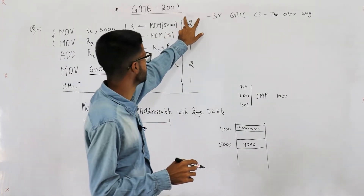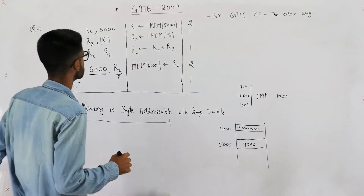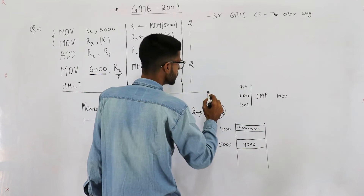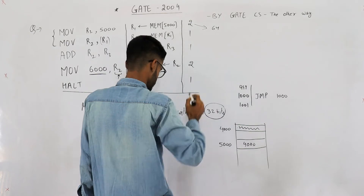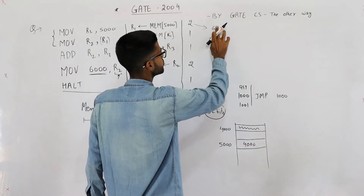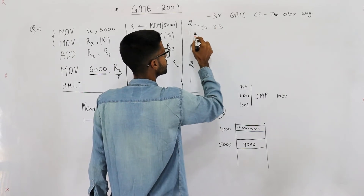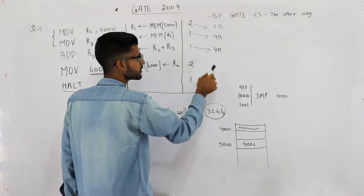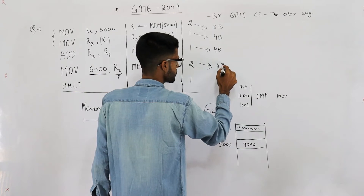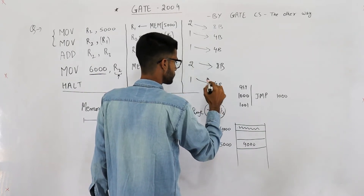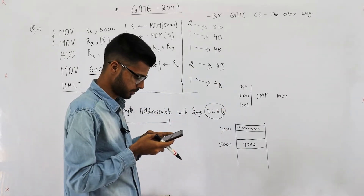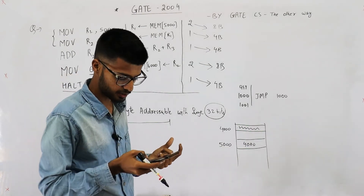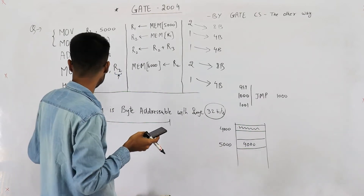You are given the sizes of instructions in words. The MOV instruction is two words — one word is 32 bits, so two words is 64 bits, which equals eight bytes. The next instructions are each one word, which is four bytes. The program starts from address 1000, and we need to find the return address saved when an interrupt occurs at the HALT instruction.